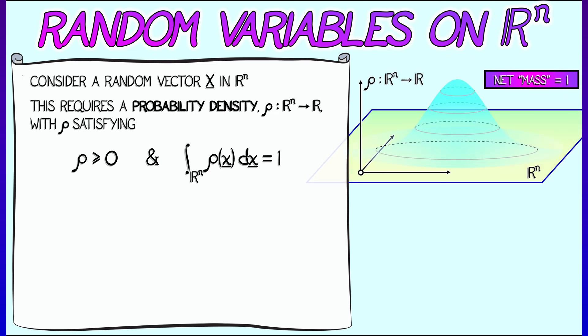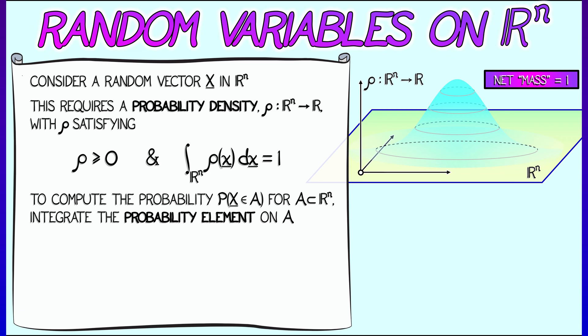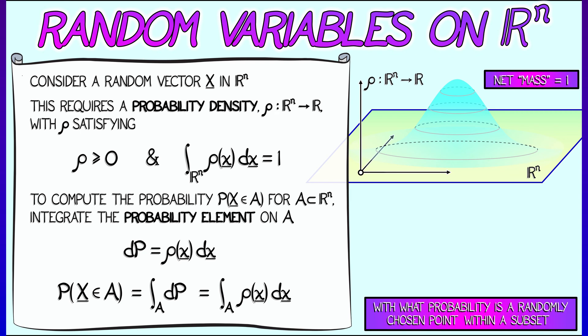So if I want to know what's the probability that a randomly chosen vector in R^n lies in some subset A, then I integrate the probability element dP, which is rho of x dx, over that subset A. If I integrate rho of x dx over A, I get the probability that a randomly chosen point lies in this subset A.